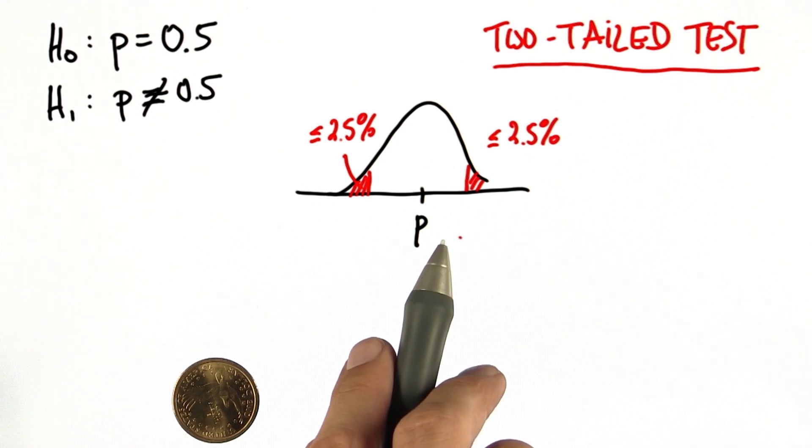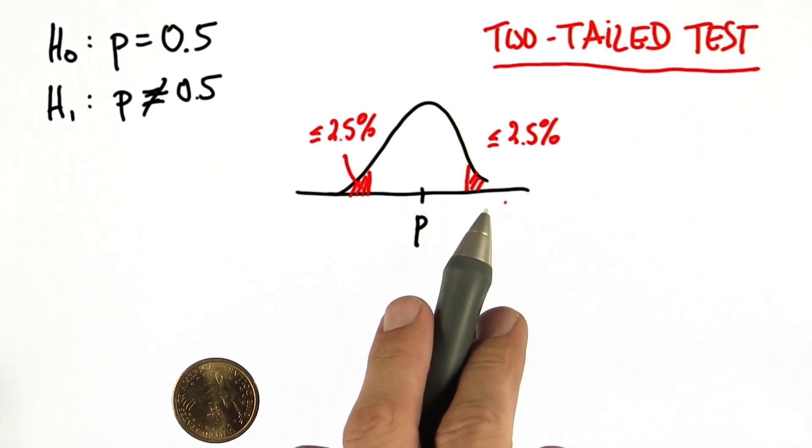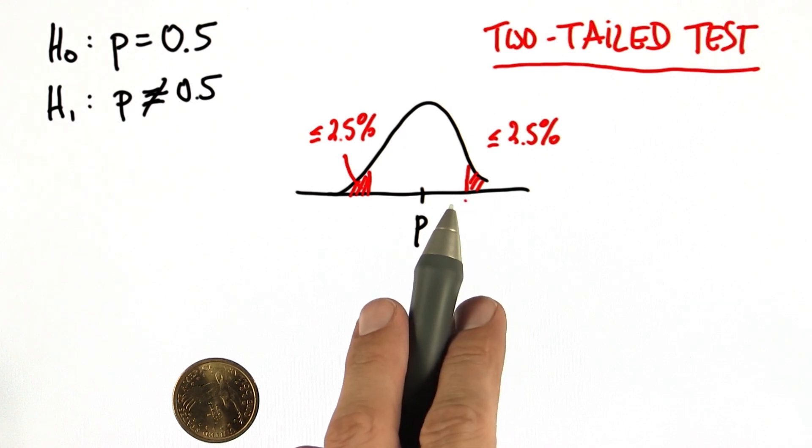It's called a two-tailed test. And in totality, the two critical regions on left and right don't exceed 5%. So this looks awfully like a confidence interval, right?